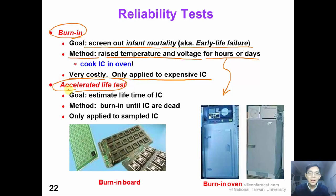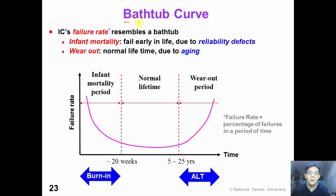The second reliability test is accelerated life test. The goal is to estimate the lifetime of the IC, so we burn the IC in the oven until they are dead. Because the results of accelerated life test are dead ICs, this test is only applied to a small amount of sample ICs. This is the famous bathtub curve that shows the IC's failure rate over time. Because the shape of this curve resembles a bathtub, we call it a bathtub curve.